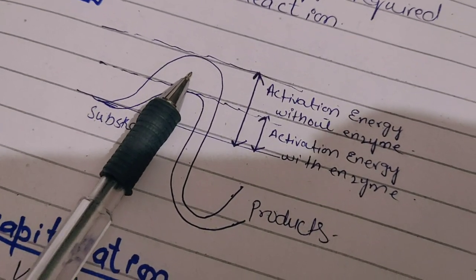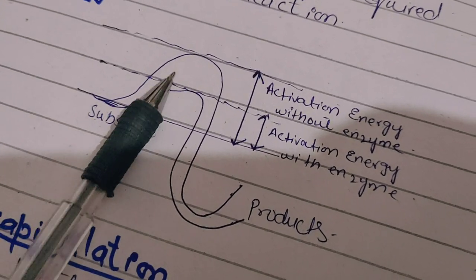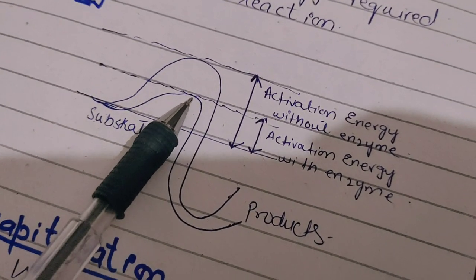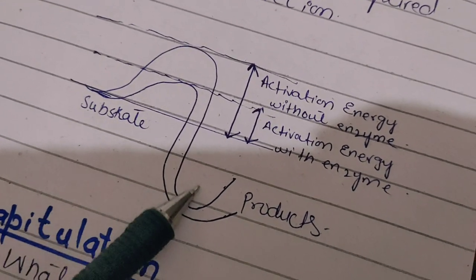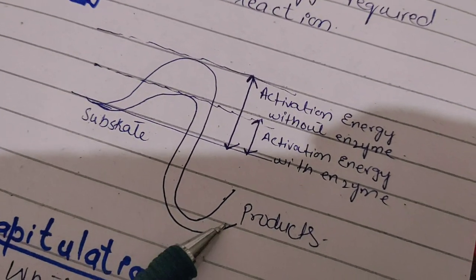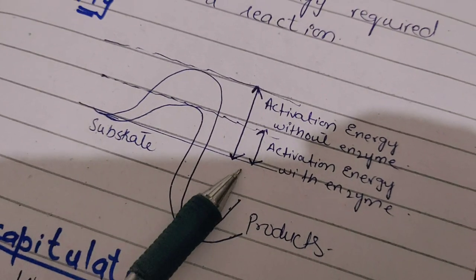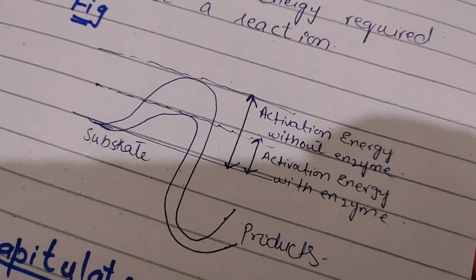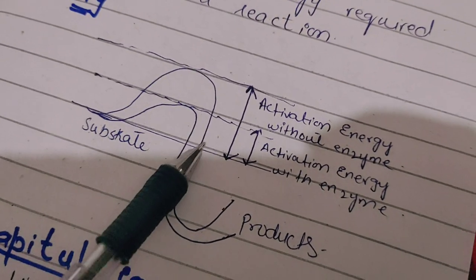At the activation point, energy is absorbed by the substrate — this is the activation energy. The substrate then breaks down and converts into a product. This activation energy converts the substrate into the product, and this point is called the activation point.